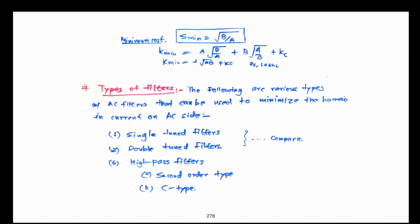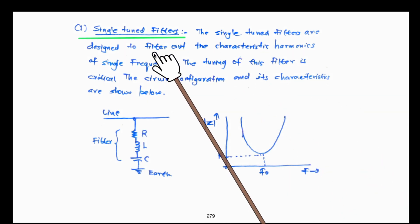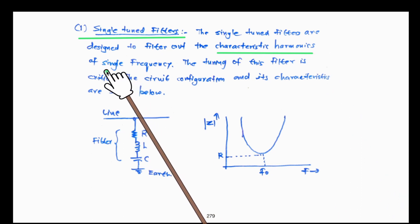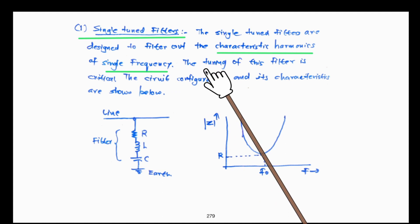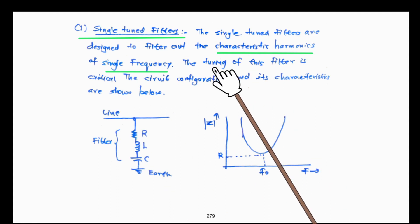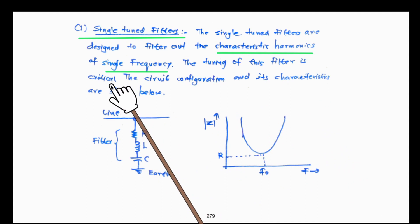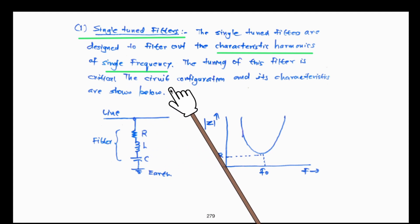A single-tuned filter is designed to filter out a single characteristic harmonic frequency. The tuning of this filter is critical — as established, a higher Q factor gives better tuning. The filter must precisely select one particular frequency; if that frequency is not properly tuned, the harmonic cannot be minimized.